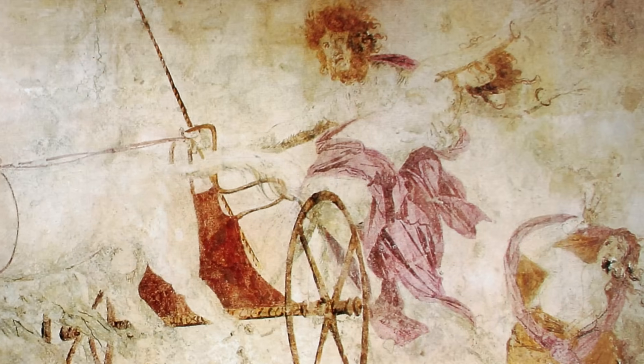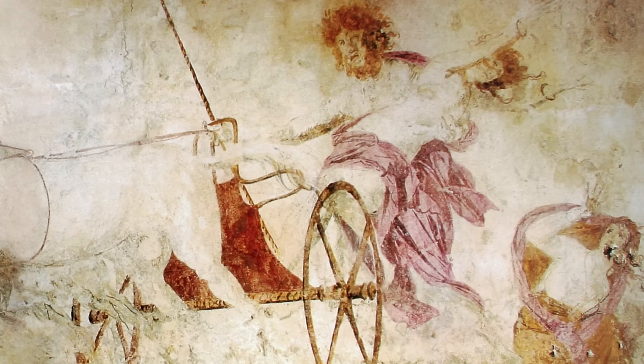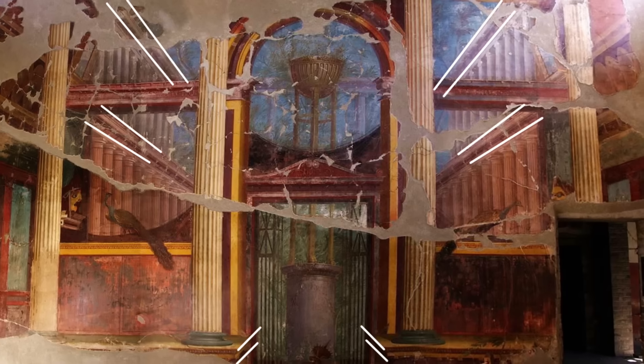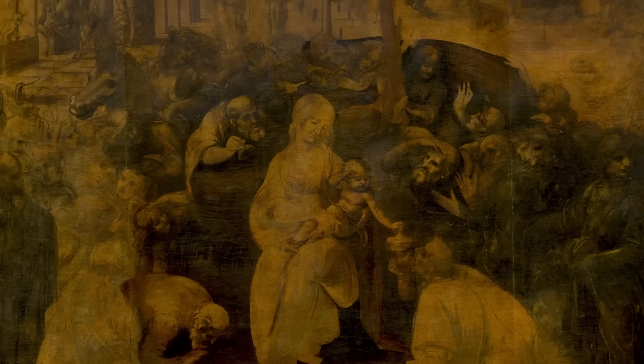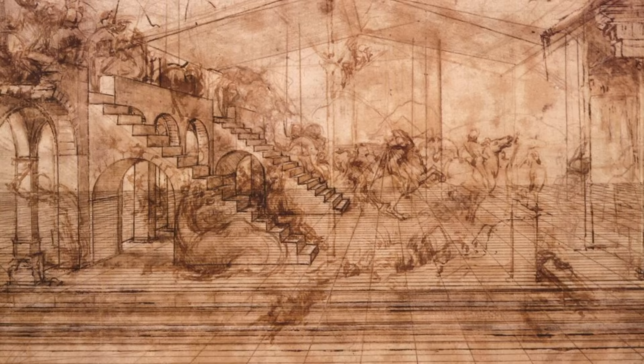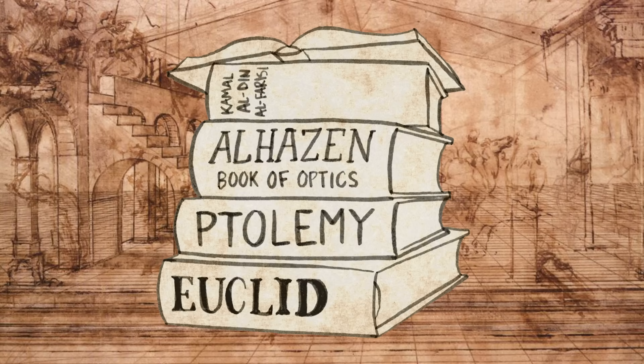Classical Greek and Roman artists realized they could make objects seem further by drawing them smaller, but many early attempts at perspective were inconsistent or incorrect. In 15th century Florence, artists realized the illusion of perspective could be achieved with higher degrees of sophistication by applying mathematical principles.